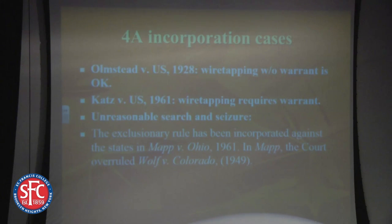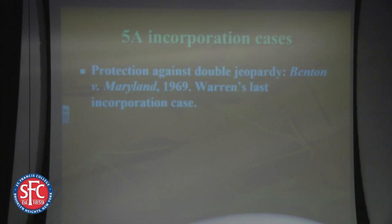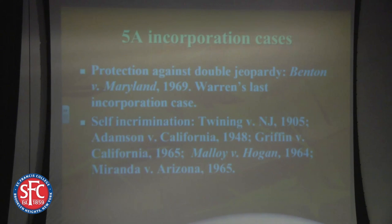There were prior cases like Olmstead, which had to do with wiretapping — wiretapping without a warrant was perfectly acceptable in 1928, but by 1961 it required a warrant. Then finally Mapp v. Ohio applied the Fourth Amendment to all citizens. Miranda v. Arizona is actually a Fifth Amendment case. In 1969, Warren's last year on the bench, he finally overturned Palko v. Connecticut from 1937, ruling that protections against double jeopardy are protected under the Fifth Amendment — his last major incorporation case. There were earlier Fifth Amendment cases on self-incrimination: in Twining v. New Jersey in 1905 and in Adamson, the court said self-incrimination was not protected. Then finally in Griffin, Malloy, and Miranda v. Arizona, the court incorporated the Fifth Amendment.